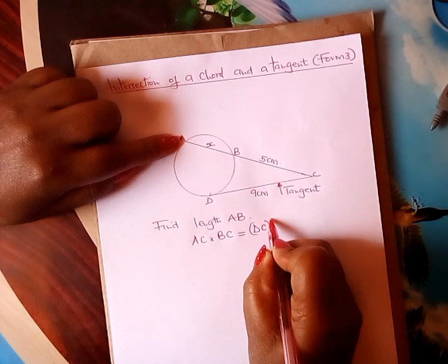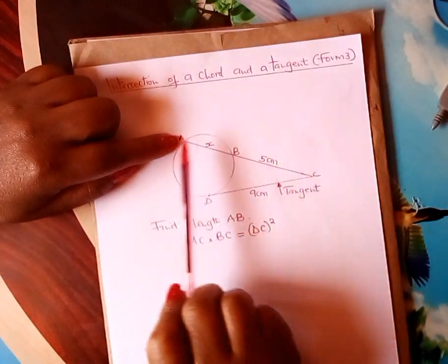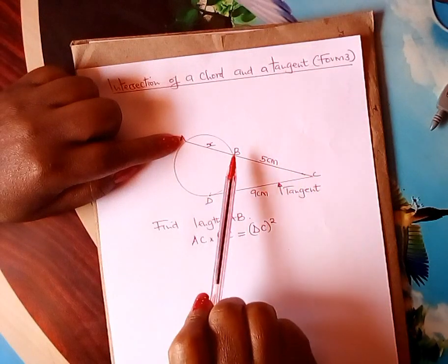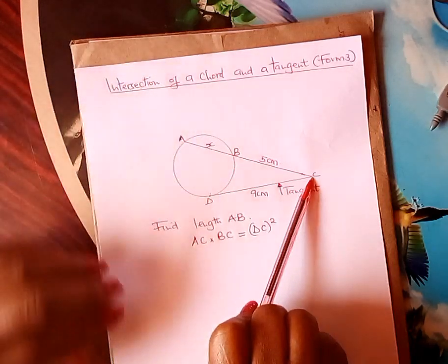DC squared. I repeat: AC times BC equals the length of the tangent squared.